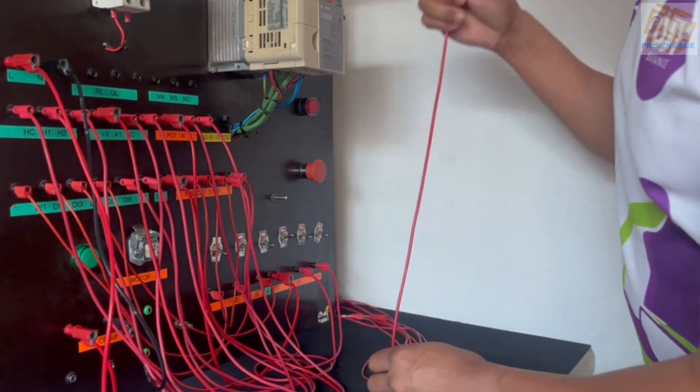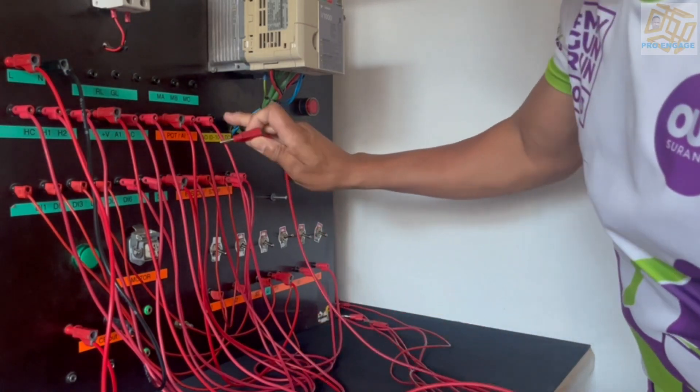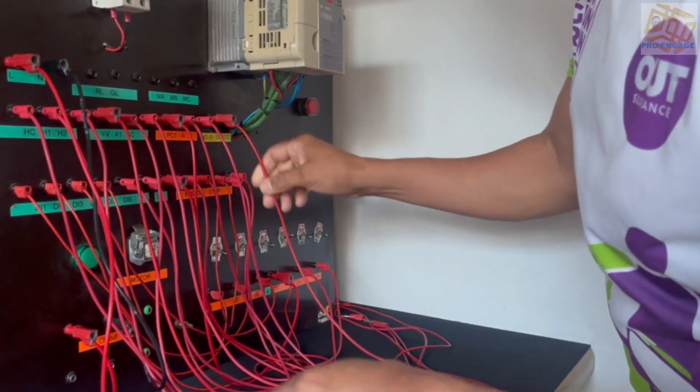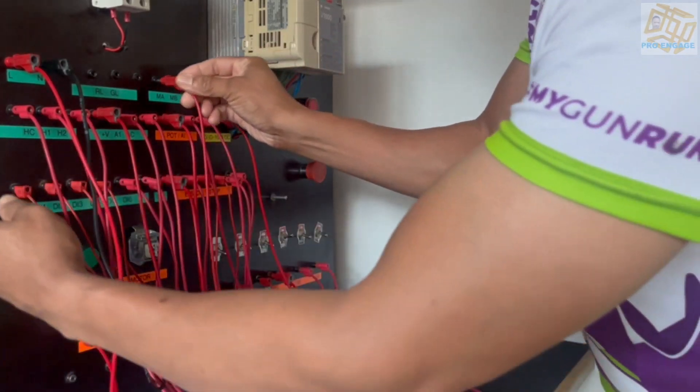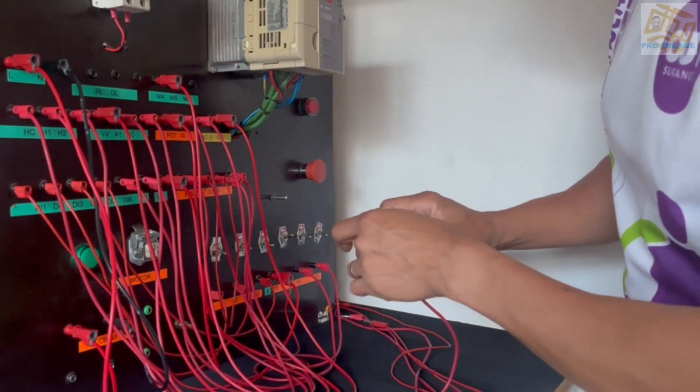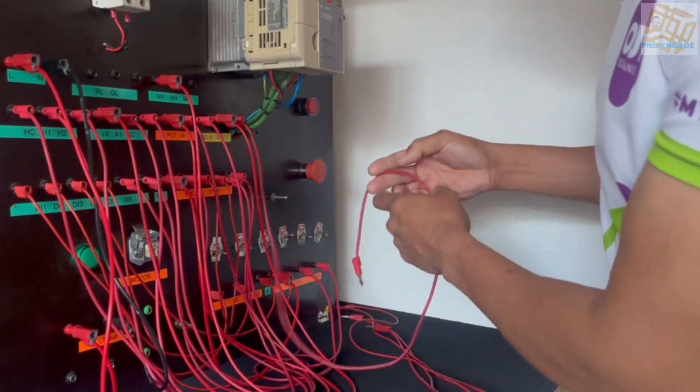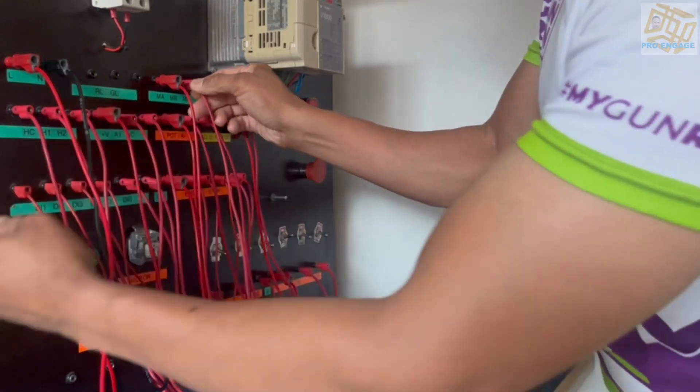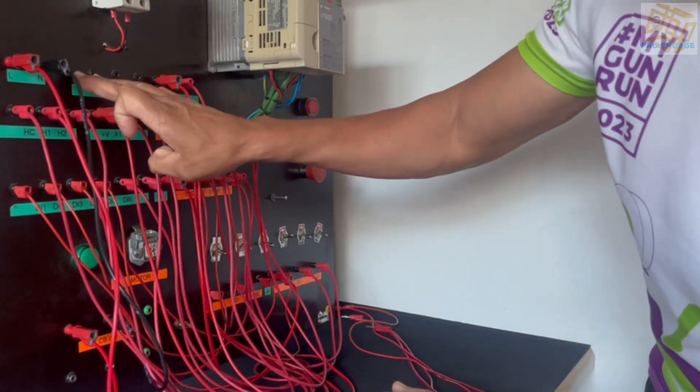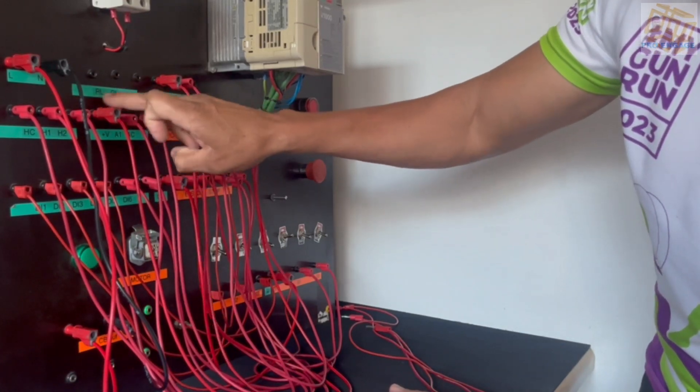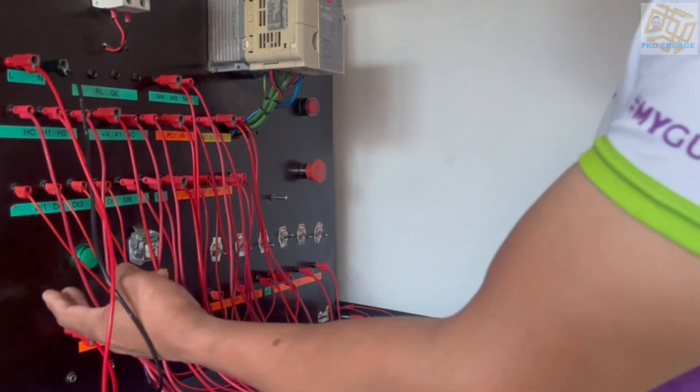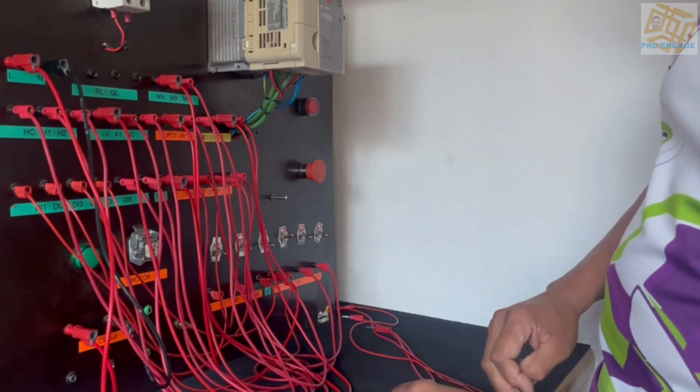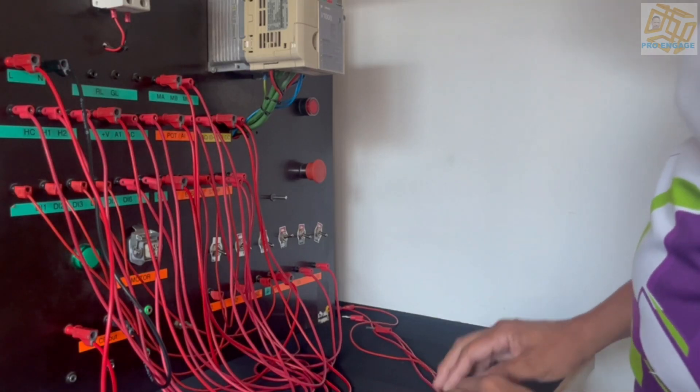We've connected the pot now and what's left is the fault connection. This panel works where I'm supplying the panel with 230 volts but we're using a three-phase motor.